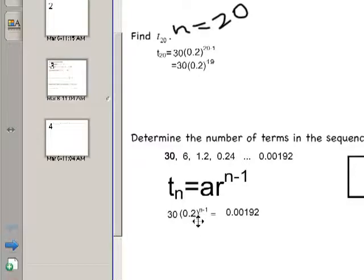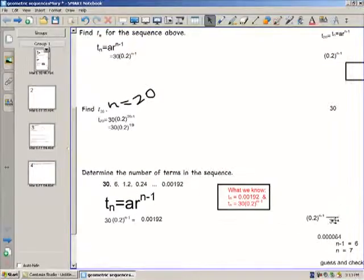To isolate the power, I will divide both sides by 30 so that I isolate the power. So the left side gets divided by 30 and the right side gets divided by 30.